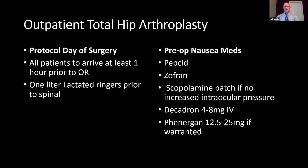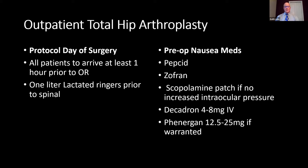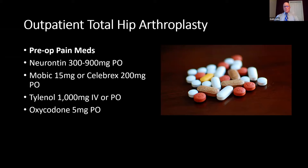On the day of surgery, all patients arrive at least one hour prior to the OR. One liter of lactated Ringer's prior to the spinal is given. Pre-op nausea medications include Pepcid, Zofran, and Scopolamine patch. If there's no increase in intraocular pressure, typically Decadron 40 milligrams IV is given, and if warranted, Phenergan 12.5 to 25 milligrams. As far as pre-op pain medications, Neurontin 300 to 900 milligrams PO, either Mobic 15 milligrams or Celebrex 200 milligrams preoperatively, Tylenol 1,000 milligrams IV or PO, and Oxycodone 5 milligrams PO.